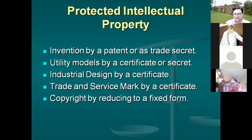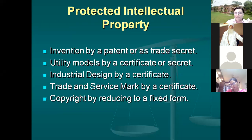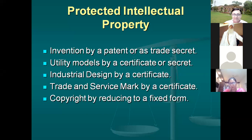An invention may be protected by a patent or kept as a trade secret. Once registered in your name — whether copyright or patent — a certificate is issued giving you the exclusive right to use it or grant that right to others. Protection may be through industrial design certificate, service mark certificate, or copyright by reducing to fixed form. Various kinds of protection are given under various laws. Registration ensures that only you can use your intellectual property, or others may use it only with your permission.